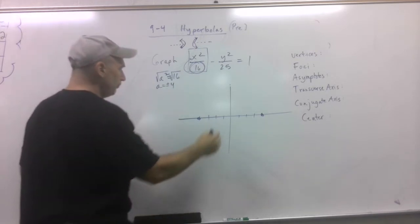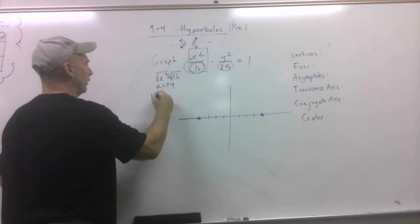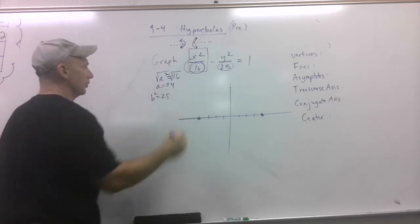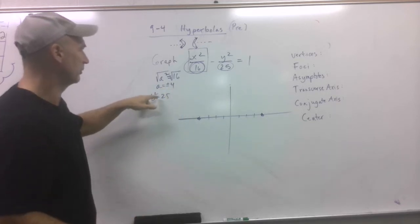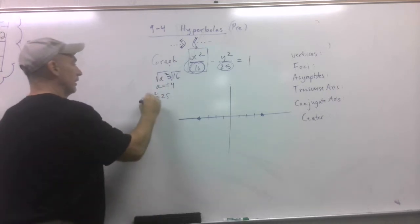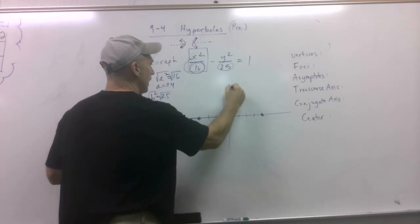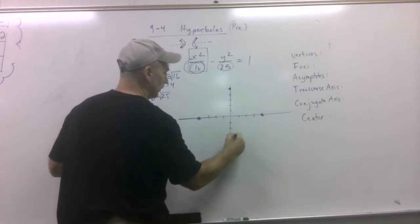With that being said, I'm now going to say, well, that must be my B squared on the right. Now notice, B squared is bigger than A squared. It's not like ellipses. So I take the square root of both sides and I go up 1, 2, 3, 4, 5. 1, 2, 3, 4, 5.